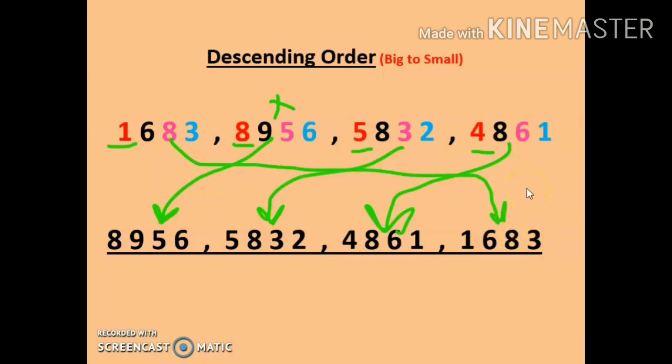Whenever we do descending order, we focus only on the big number. In ascending order, we focus on the small number. Same as ascending order, rule number 1 is to count the number of digits. If the number of digits are the same, we compare the positions — first thousands place, then if thousands place are the same, hundreds place, then tens place, then ones place.